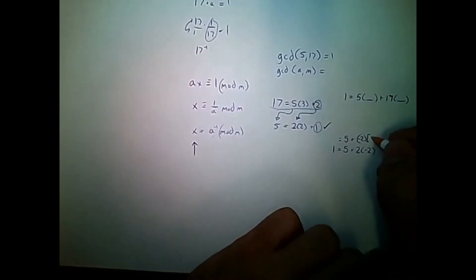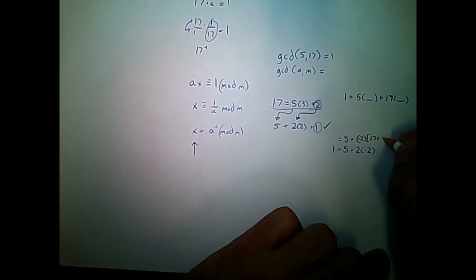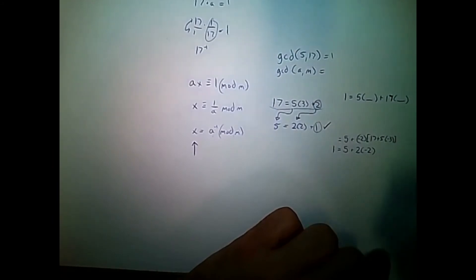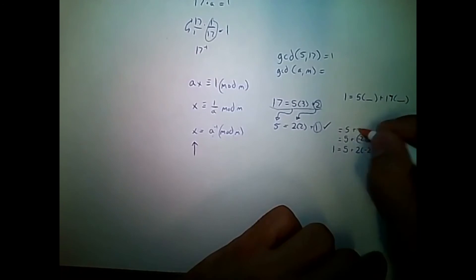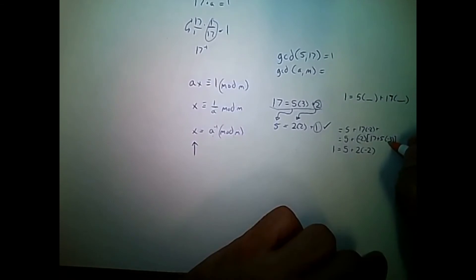And this is equal to 5 plus, I'm going to move out this negative 2, and solve for 2 on this equation right here, which is equal to 17 plus 5 times negative 3. So, let me distribute these out. 5 plus 17 times negative 2. Plus, well, 5 times with negative 3 times negative 2 will give me 5 times 6.